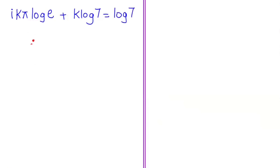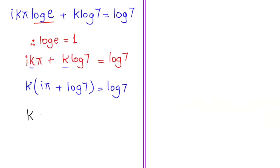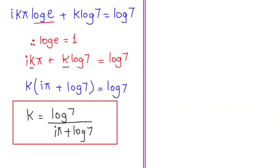Now we have the logarithm rule that log of e is equal to 1, so I am going to write 1 here. So it turns to iπk plus k log of 7 is equal to log of 7. Now I am going to factor out k: k times (iπ plus log of 7) is equal to log of 7.